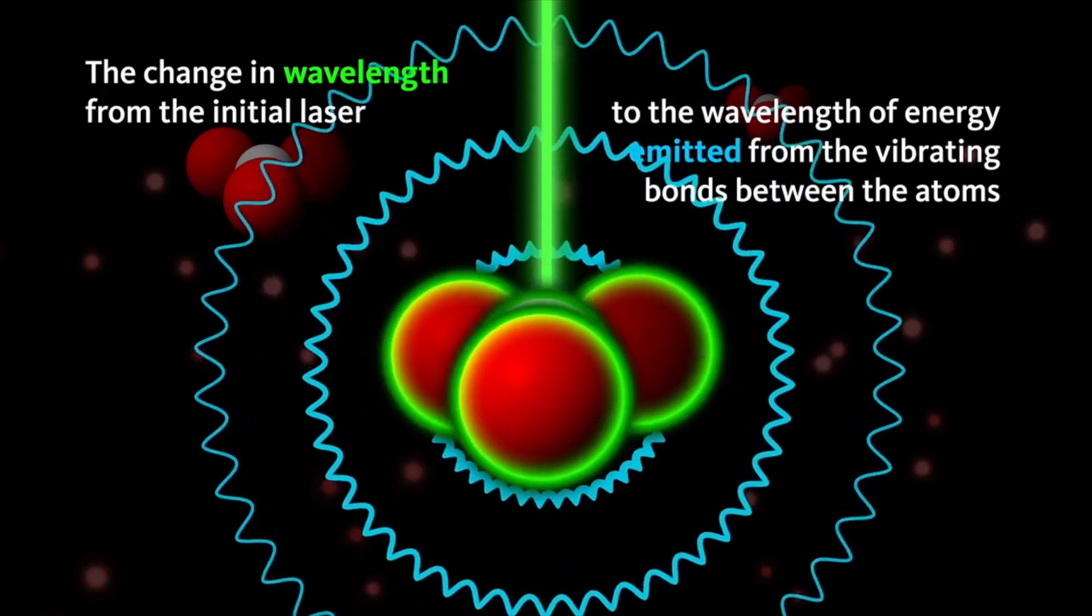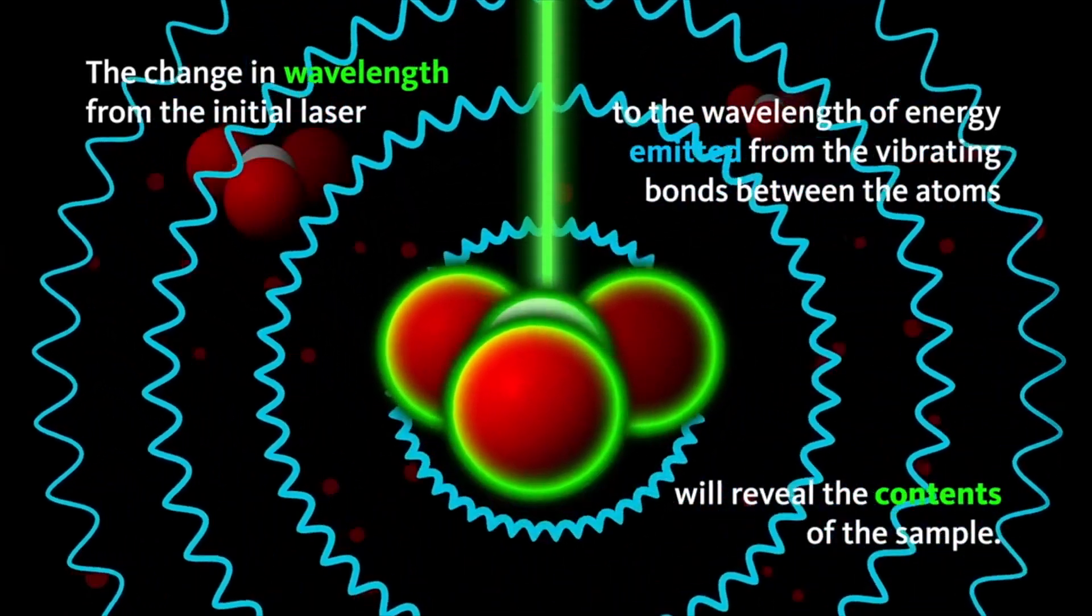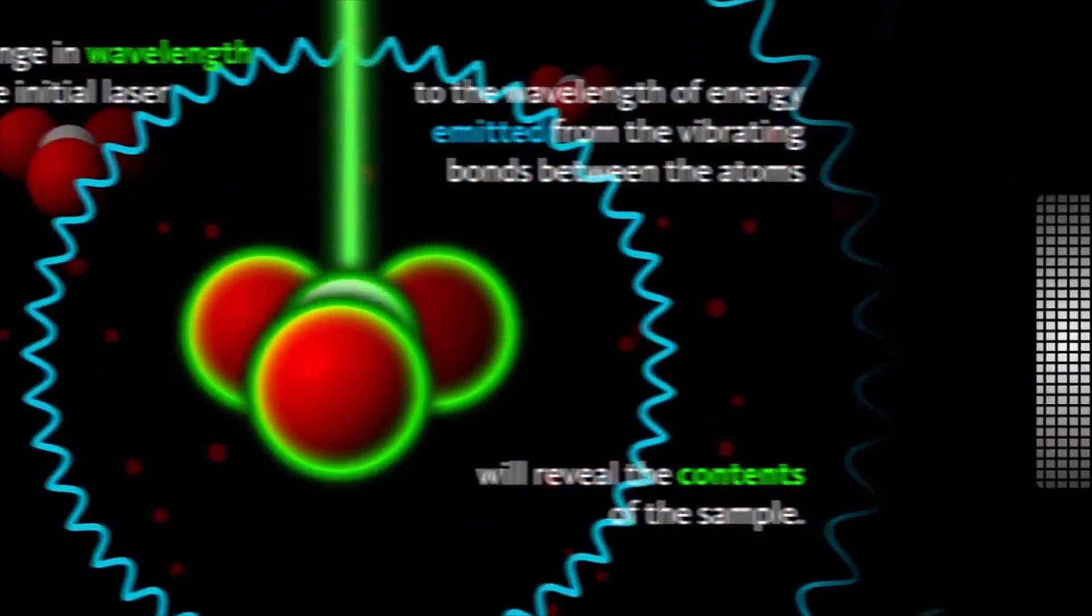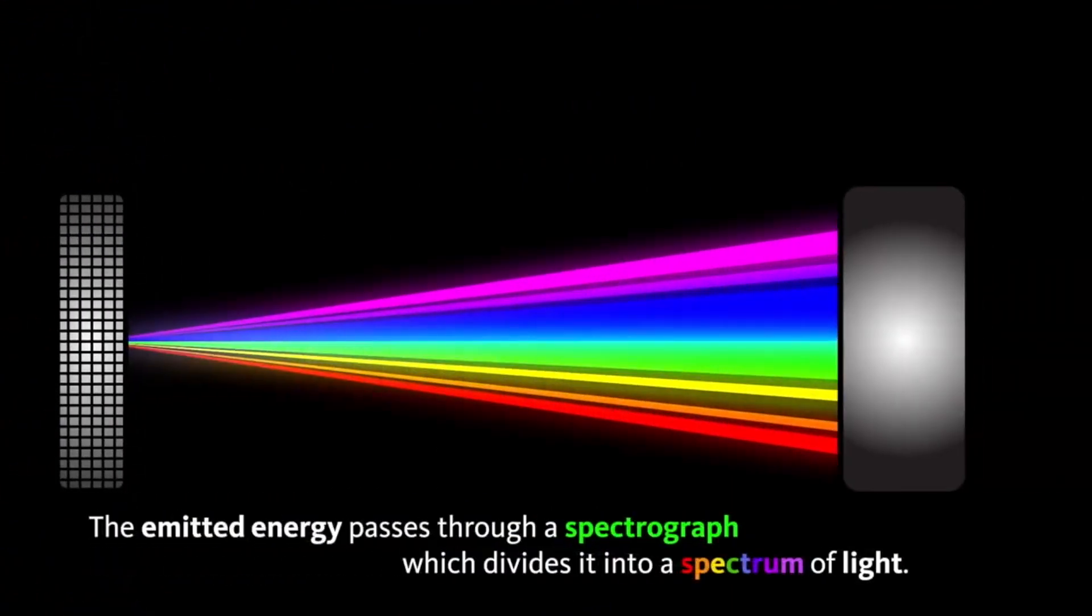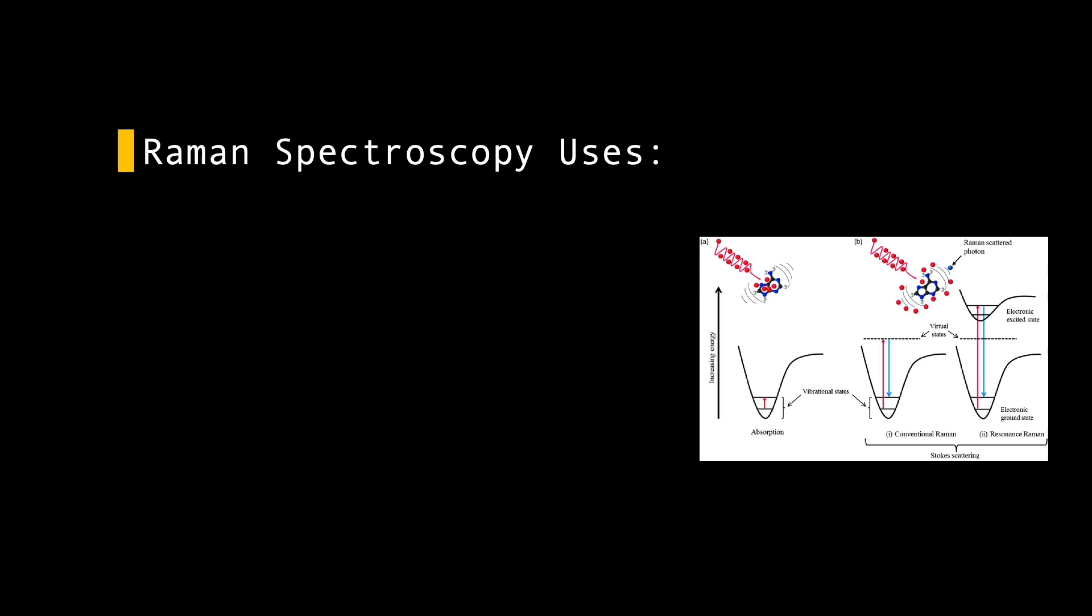However, a small percentage of light is scattered at various wavelengths or colors depending on the analyzed chemical structure. This is referred to as Raman scattering. Basically, spontaneous Raman spectroscopy or linear Raman spectroscopy is a spectroscopic technique commonly used to determine the vibrational modes of molecules via photon scattering.